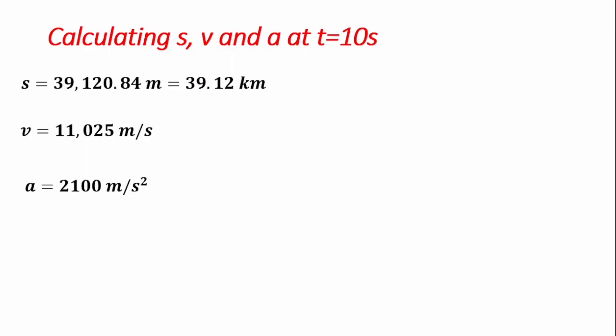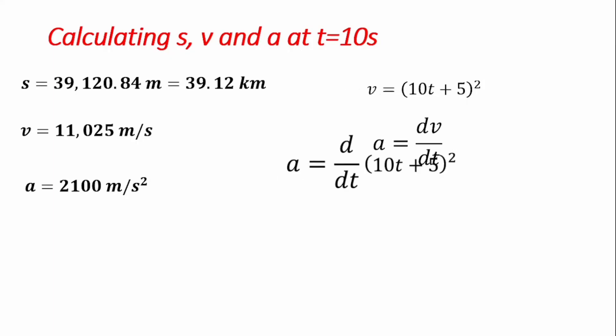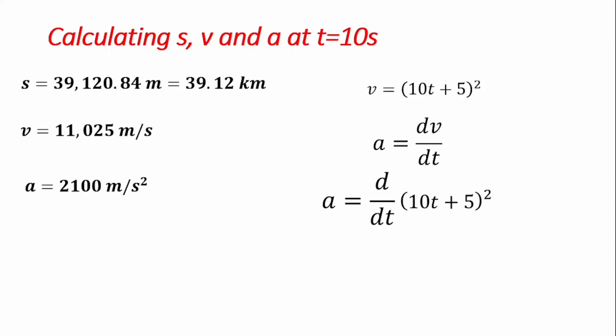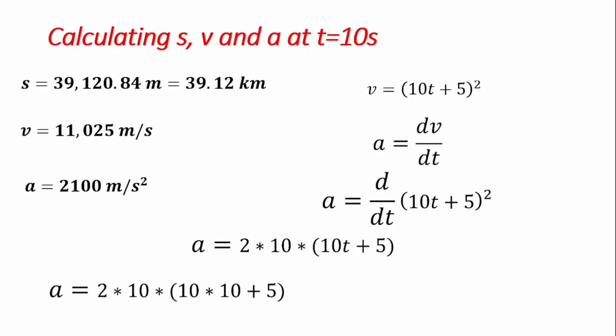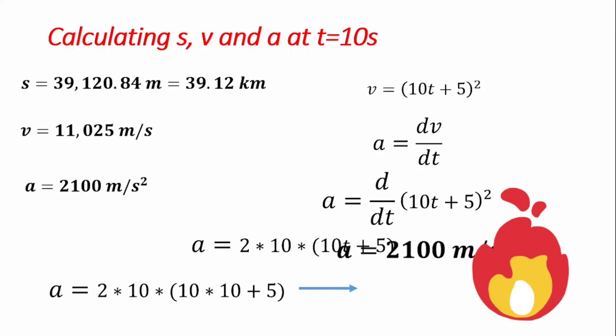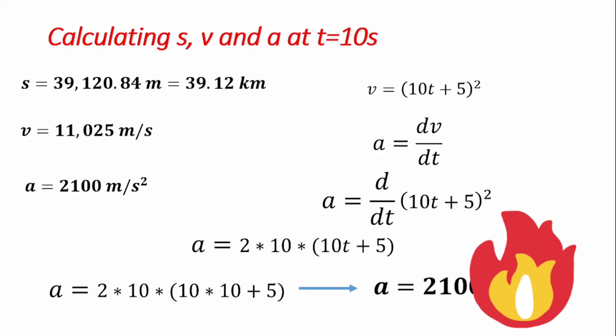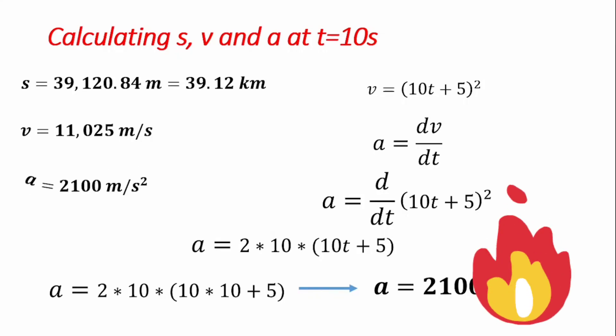To verify, we already have our velocity relation v equals (10t plus 5) squared. Since acceleration equals dv/dt, differentiating velocity gives a equals 2 times 10 times (10t plus 5). Substituting t equals 10 seconds, we get acceleration equal to 2100 meters per second squared, which matches the value we calculated earlier — confirming our solution is correct.